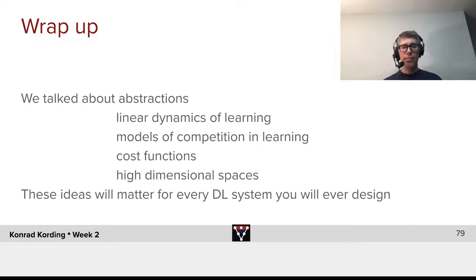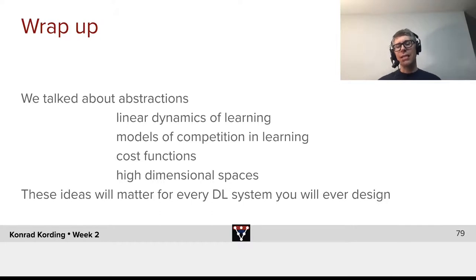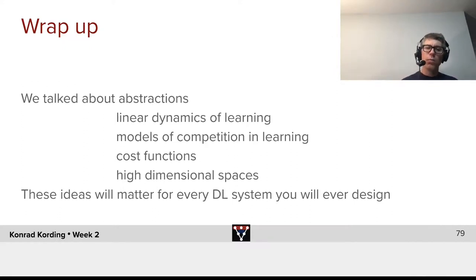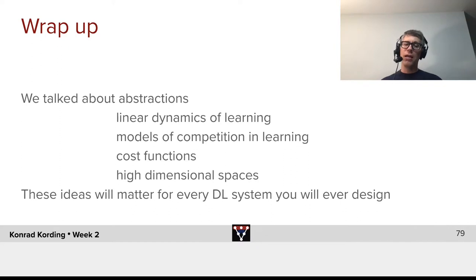Now, to wrap up for today: we talked about abstractions, which is one failure mode of us interacting with deep learning systems because the math as we write it isn't exactly what we implement. We talked about linear dynamics of learning, which generally holds the key to understanding how learning really happens and how the components interact with one another. We've seen models of competition in learning, where we saw how different dimensions can pop in one after the other. We talked about cost functions, which is of course one of the big components that we always use. And we talked about high-dimensional spaces.